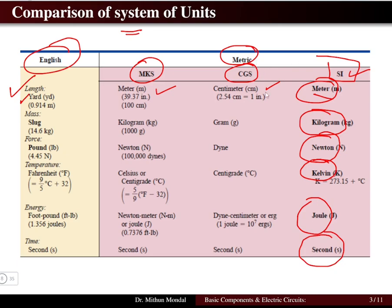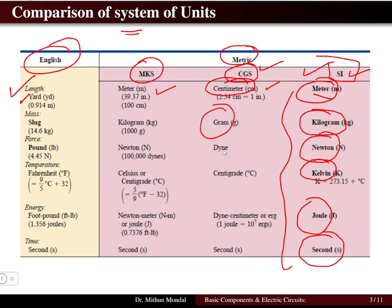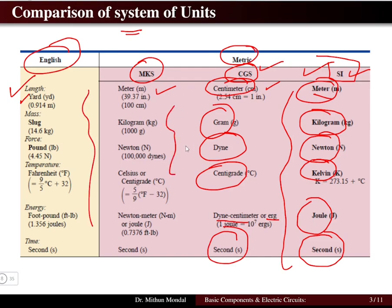In the CGS system, length is in centimeters, weight in grams, force in dynes, temperature in centigrade, and energy in dyne-centimeters or ergs; time is in seconds. To deal with different systems, it is always better to have one single system — the International System of Units — followed by all countries.